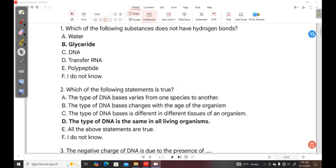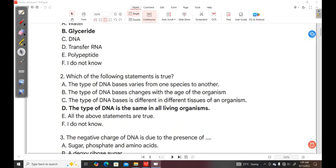Question 2. Which of the following statements is true? A. The type of DNA bases varies from one species to another. B. The type of DNA bases changes with the age of the organism. C. The type of DNA bases is different in different tissues of an organism. D. The type of DNA is the same in all living organisms. E. All of the above statements are true. F. I do not know. So the correct answer is the type of DNA is the same in all living organisms.